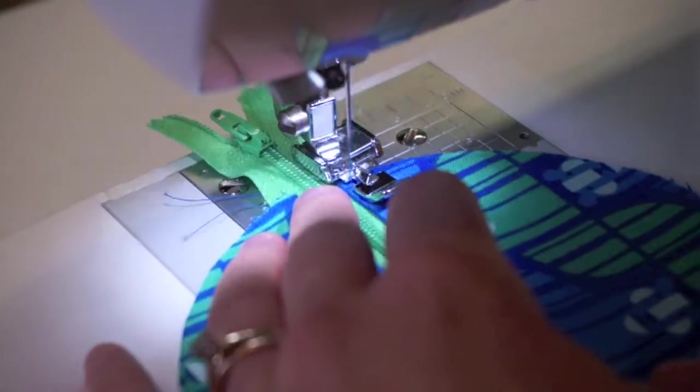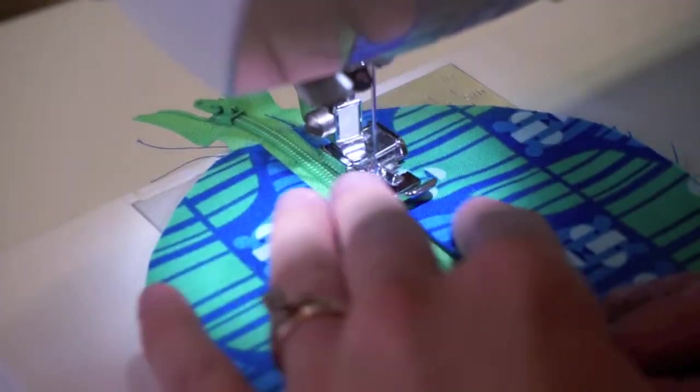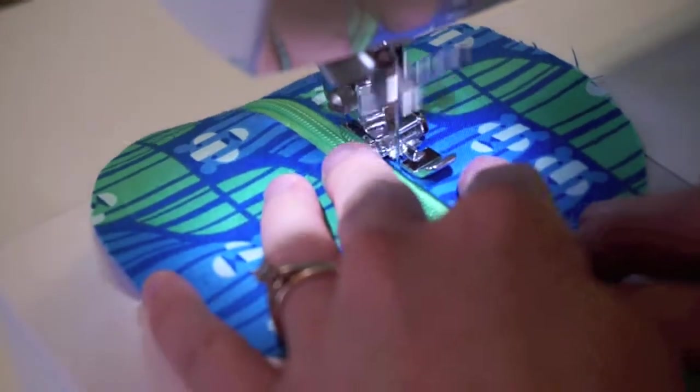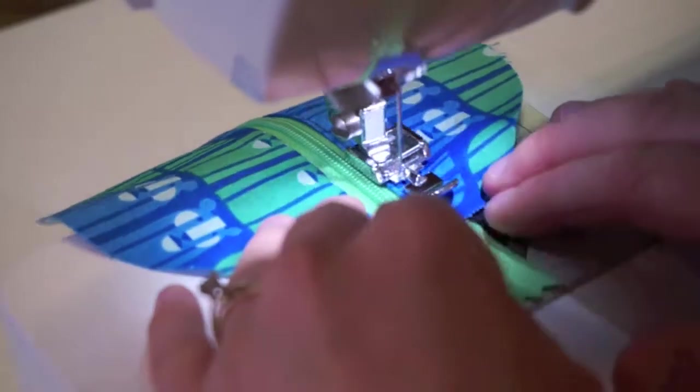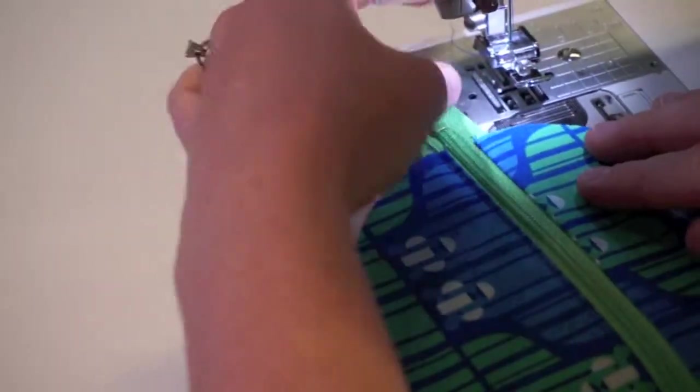And for top stitching, it's no big deal to back stitch because this is more for cosmetics just so it looks nice. And of course it holds it into place. Just do a little stitching here. And we'll do the other side real quick.